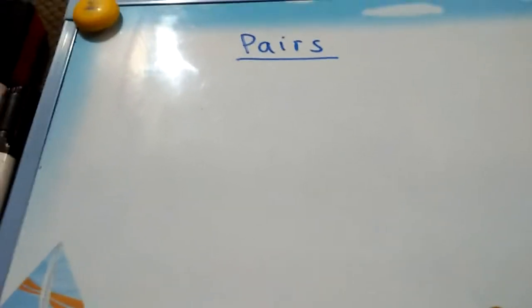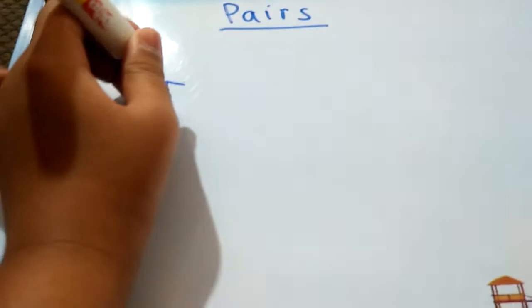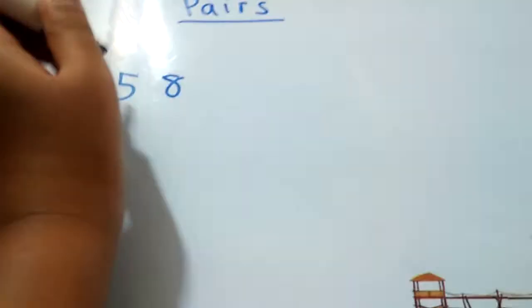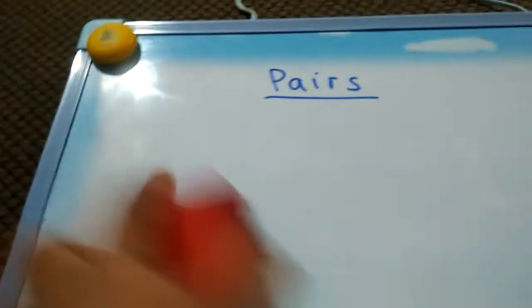So let's check them. You will see that nine does not have any pair in these two numbers. If that pair is closer I will circle it. Two has a pair.